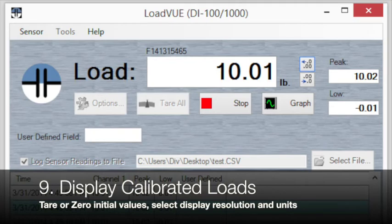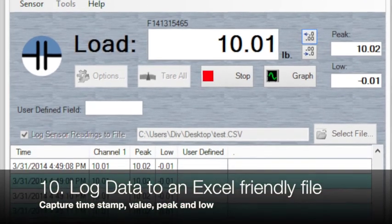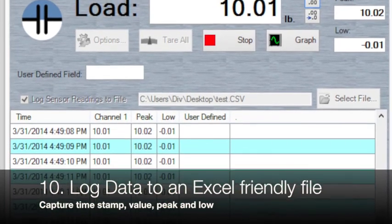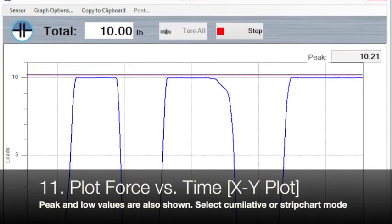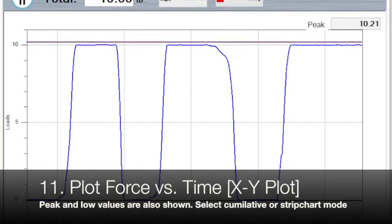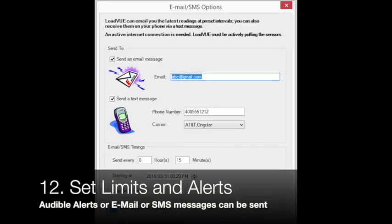Once done, you can display calibrated loads using our LoadView software. This software lets you change the units, change the log time interval, and log the data to an Excel-friendly file. It also lets you plot the data as an XY plot. And you can set alerts so if certain limits are exceeded, you can send an SMS message or email message.